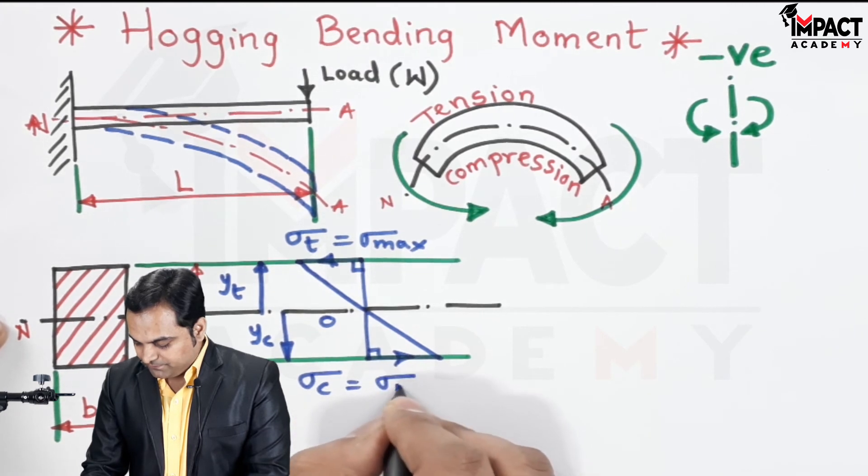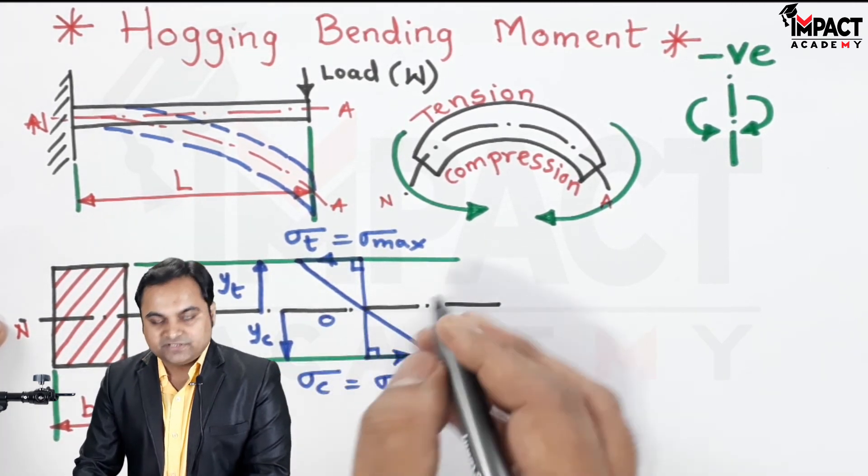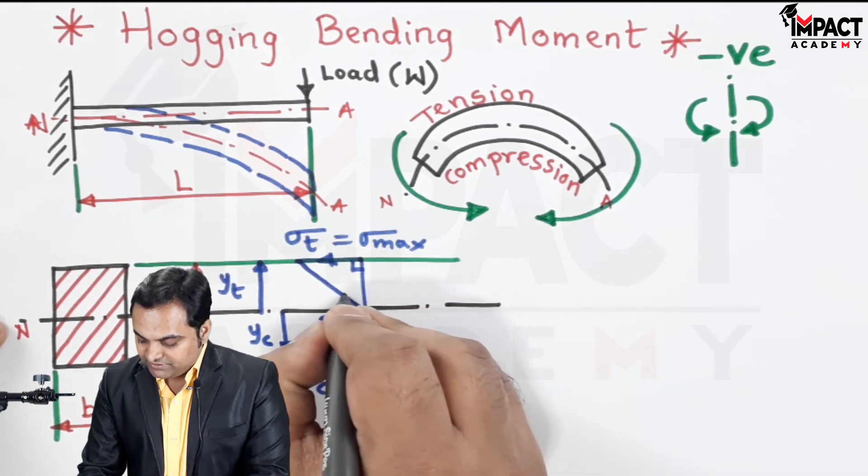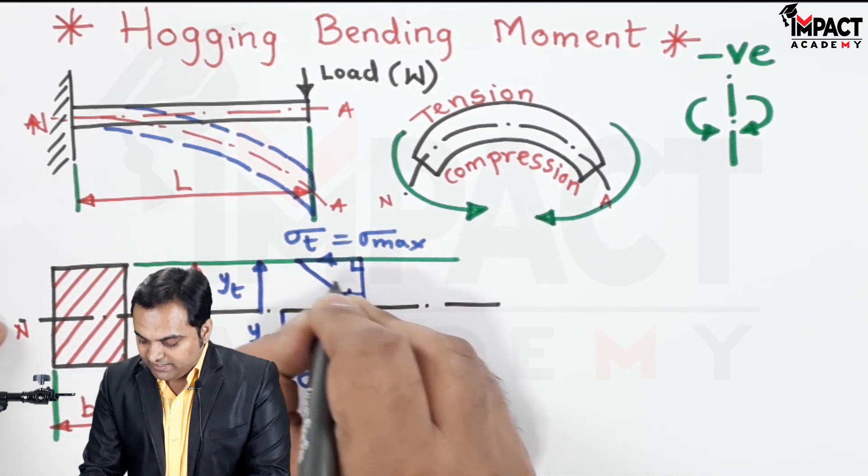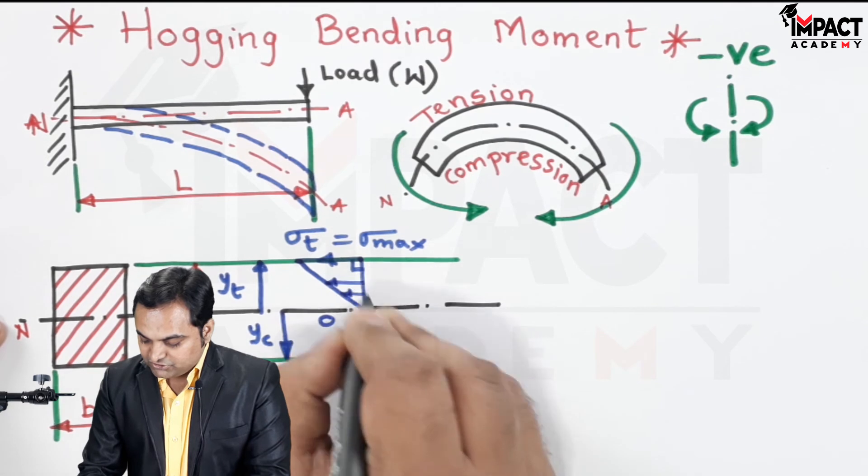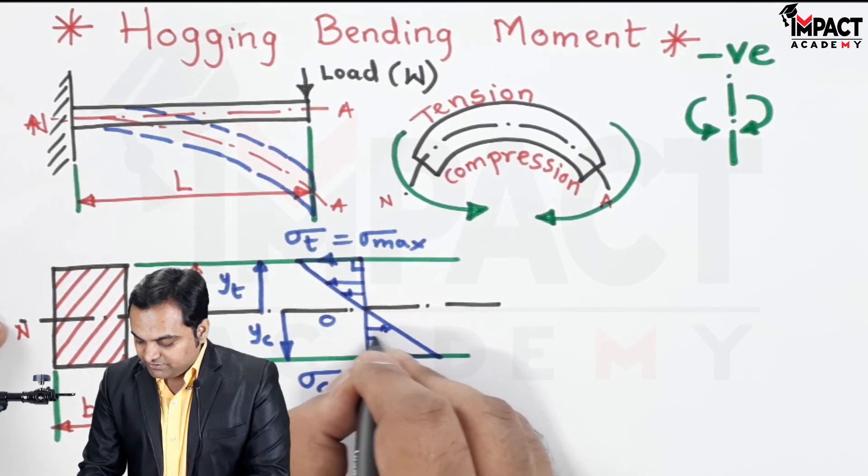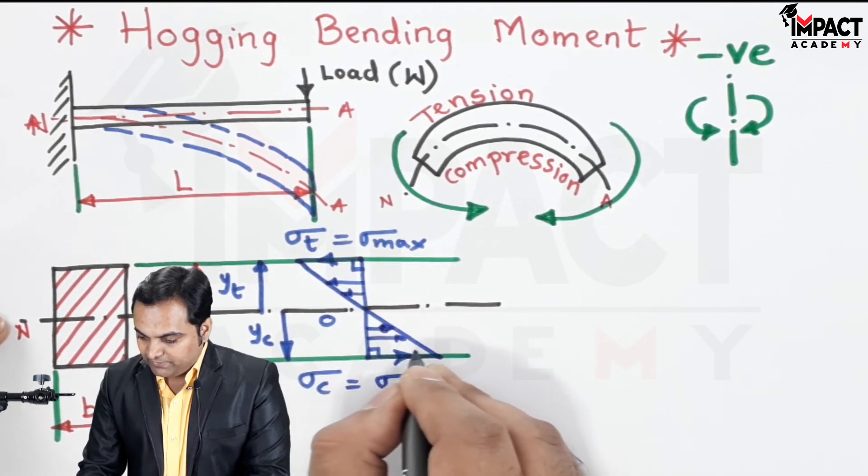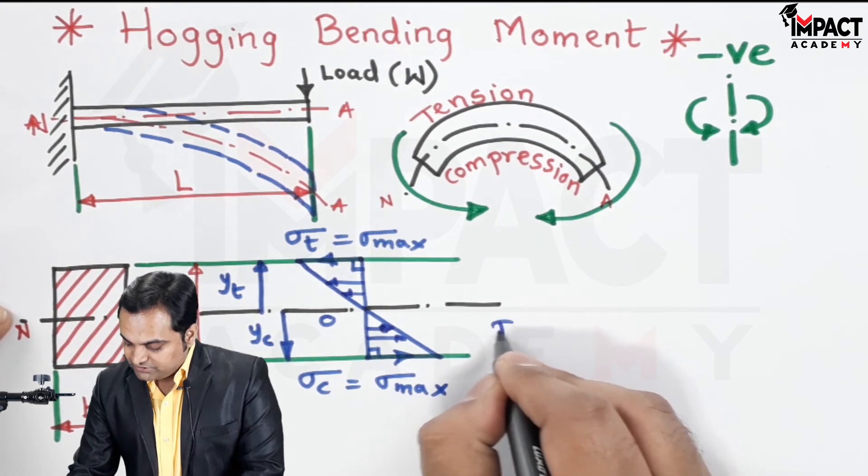Then at the bottom, since the distance is yc, so the stress is sigma c which is again the maximum compressive stress. As we see in this diagram, the moment we go on increasing the distance y from the neutral axis, the stress value increases and reaches the maximum value at the top and at the bottom.